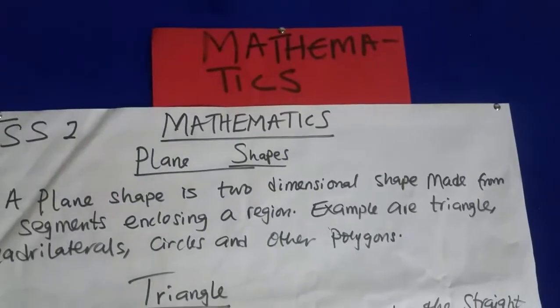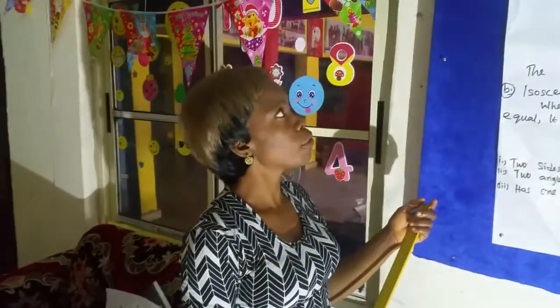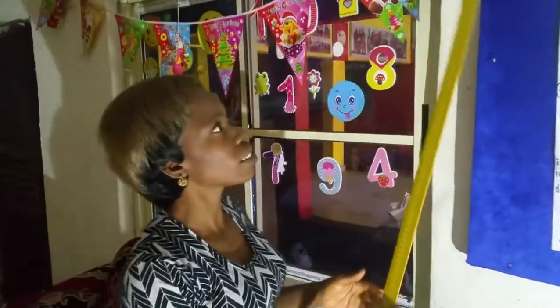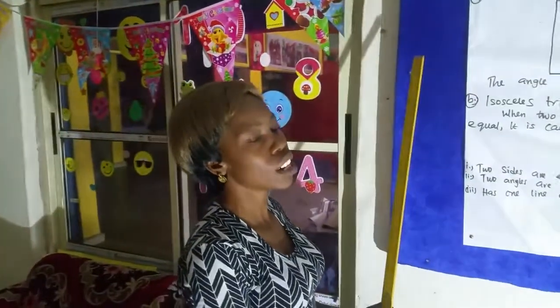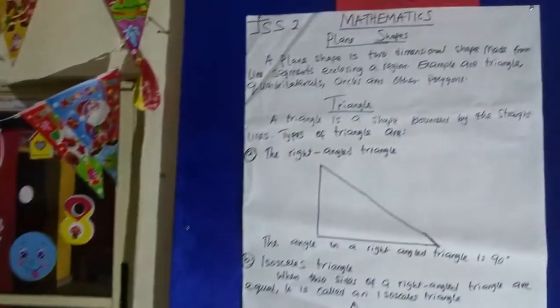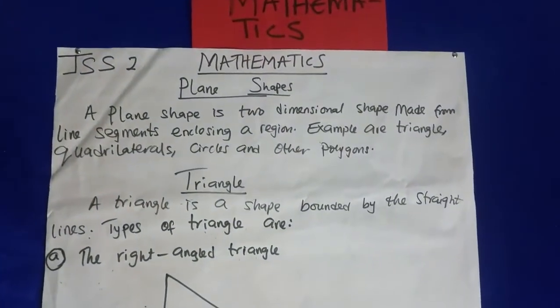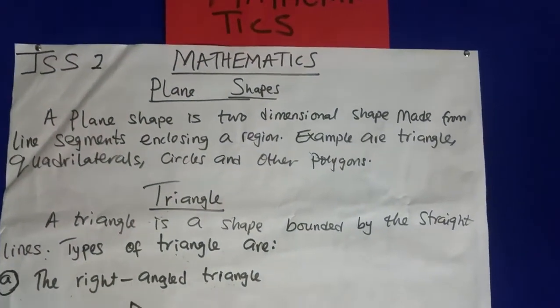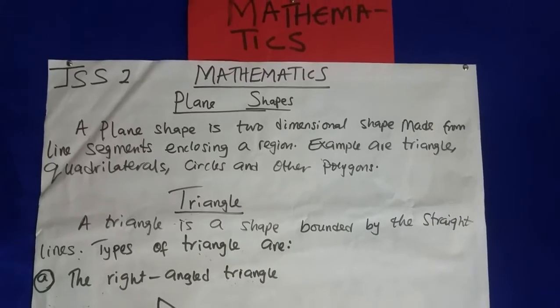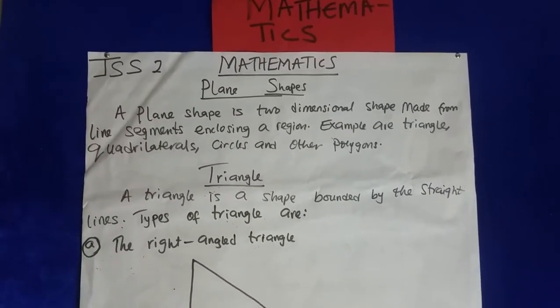Now, what's a plane shape? A plane shape is a two-dimensional shape made from line segments enclosing a region. Examples of such plane shapes are triangle, quadrilaterals, circle, and other polygons.